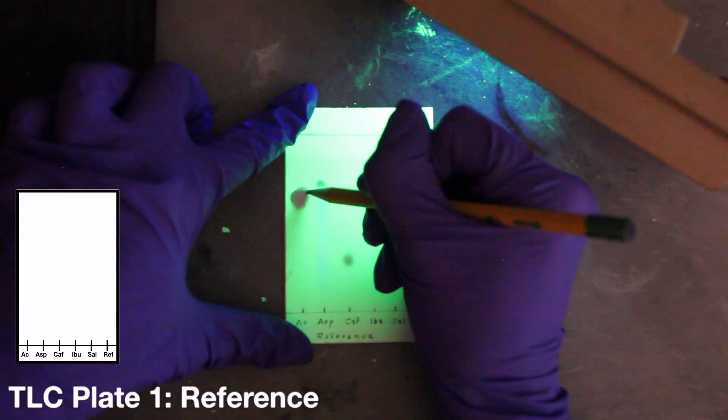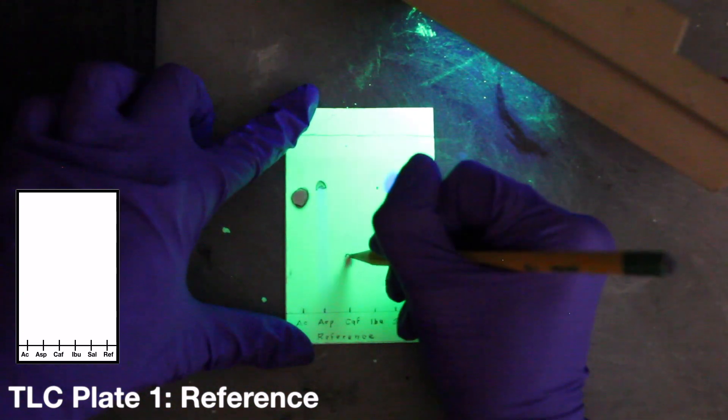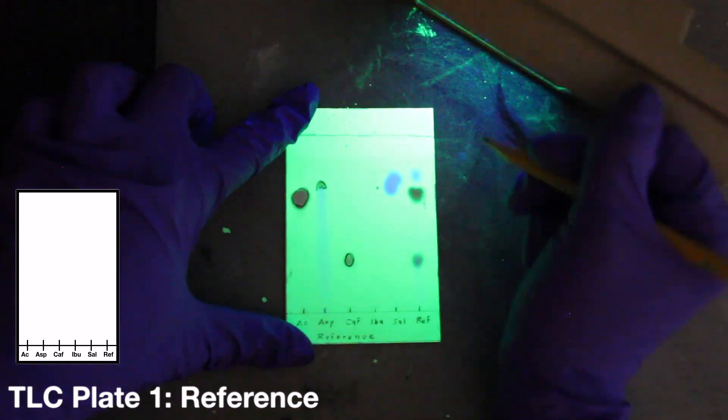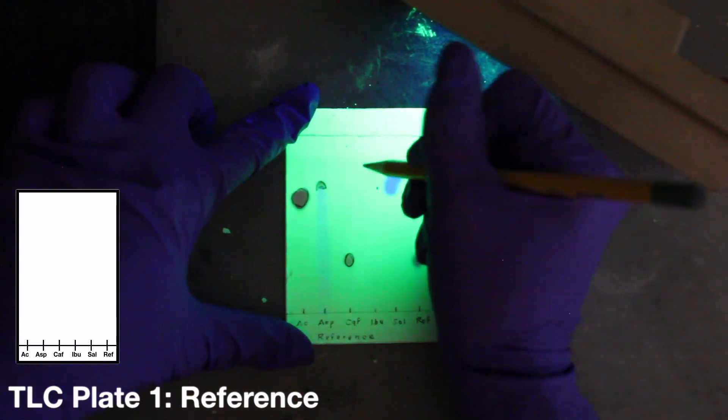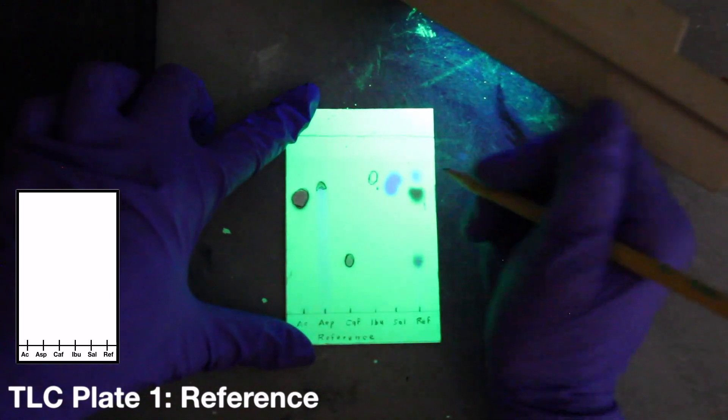You will probably notice that aspirin and salicylamide have very similar RF values, but their appearance is different under the UV light. Make a careful note of these differences as this observation will be useful in helping you determine your analgesic components. At present, over-the-counter analgesics that contain salicylamide also always contain aspirin.